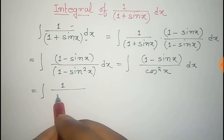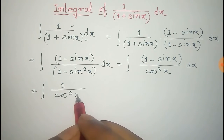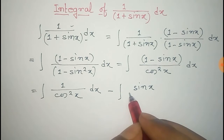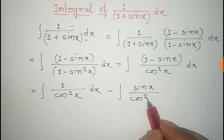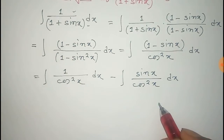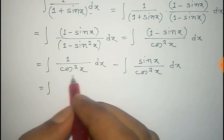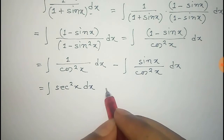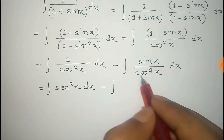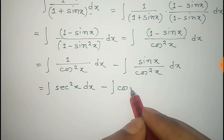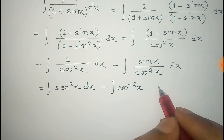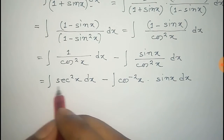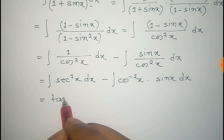Dividing the numerator by the denominator, we get the integral of 1 divided by cosine squared x dx, minus the integral of sin x divided by cosine squared x dx. The first term can be written as the integral of sec squared x dx, and the second as cosine to the power minus 2 x times sin x dx. The integral of sec squared x dx is tan x.